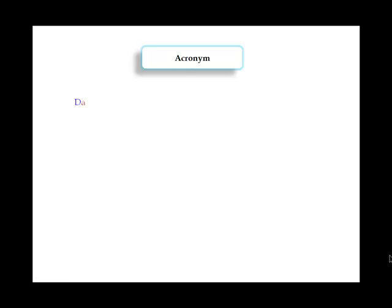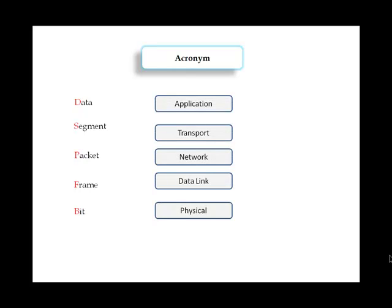For easy remembrance of how data gets encapsulated: data is encapsulated into a segment, then into a packet, then into a frame. From the frame, the data is converted into the form of ones and zeros and transmitted across to the next node.